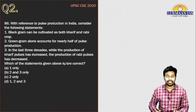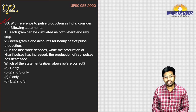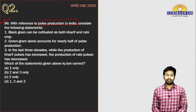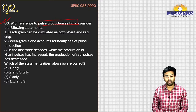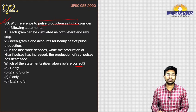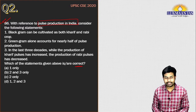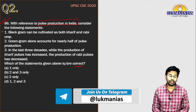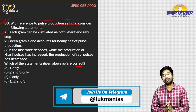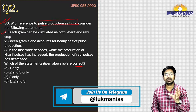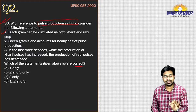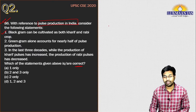Now let us take the next question, which says: with reference to pulse production in India, consider the following statements. They have given three statements and asked which are correct. Statement one says: black gram can be cultivated as both kharif and rabi crops. This statement is right. Black gram, known as urad ki dal, can be cultivated in both kharif season (autumn) and rabi season (winter).